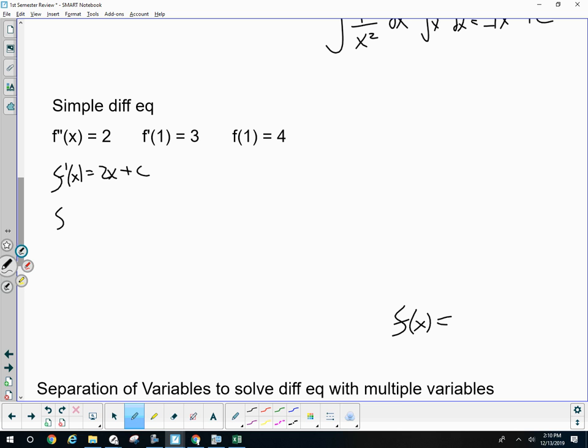f prime of 1 is 3. So when I plug in 1, I better get 3. I get c is 1. So f prime of x is equal to 2x plus 1. I'll then take the antiderivative again to get f. f of x is equal to x squared plus x plus c.